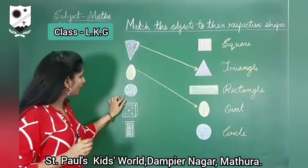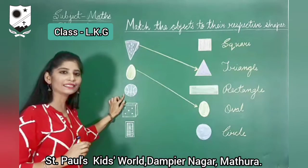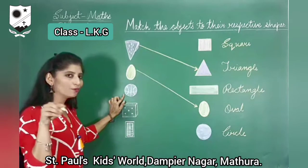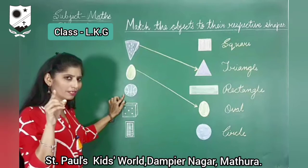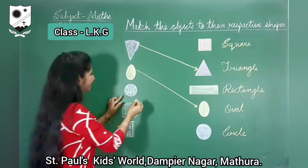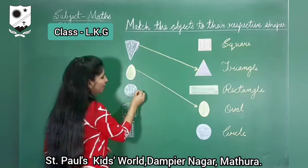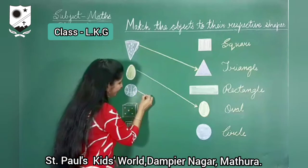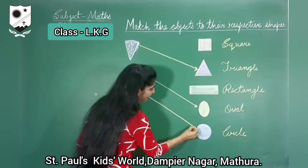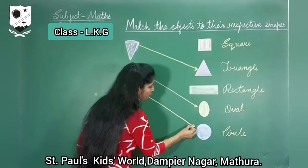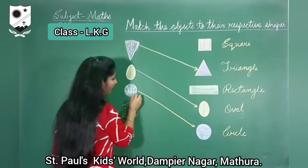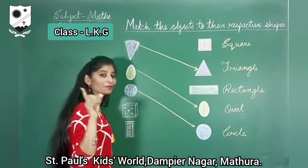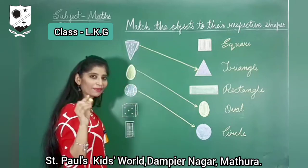What is this? This is a ball. Round, round, circle. This looks like a circle. You have to match these objects with their respective shape. Circle shape.